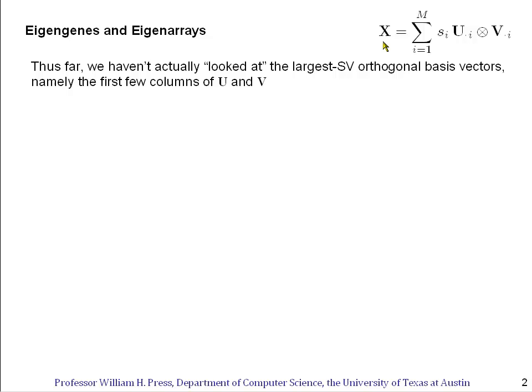So far, we've learned how to decompose our data matrix X into a singular value decomposition, a sum of rank one matrices with coefficients S sub i, the singular values, and we're viewing this sum as going from the largest singular values down to the smallest ones, so the early terms in the sum most matter in the data.